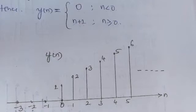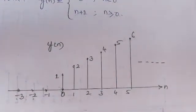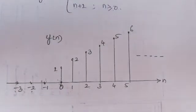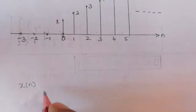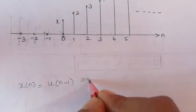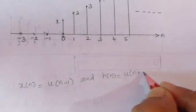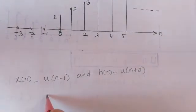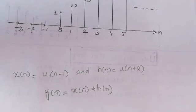In this video we discussed the convolution between a step signal and another step signal. As homework: find Y(n) = x(n) * h(n) where X(n) = u(n-1) and H(n) = u(n+2). Please put your answer in the comment box. Thank you very much.